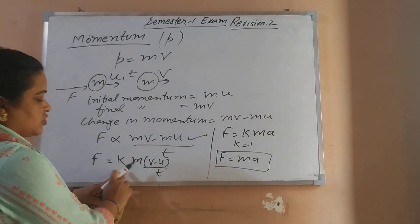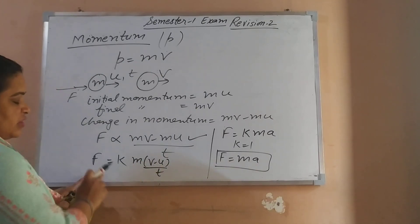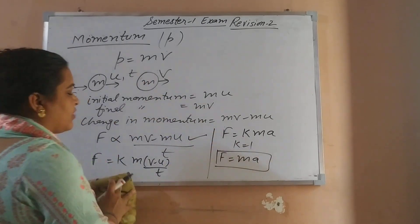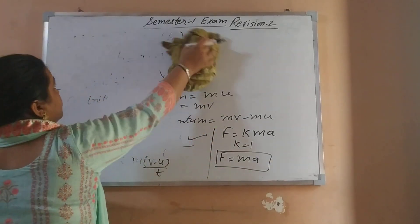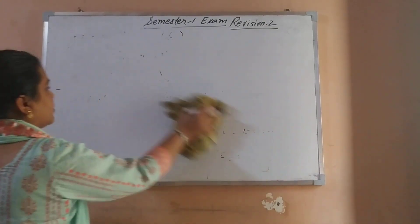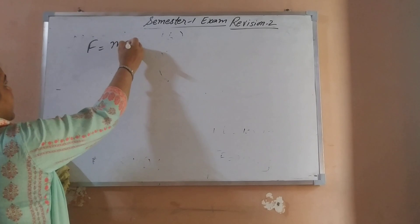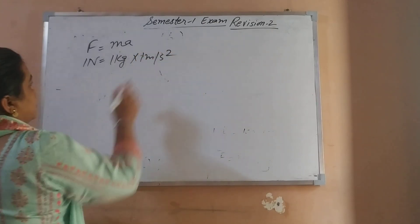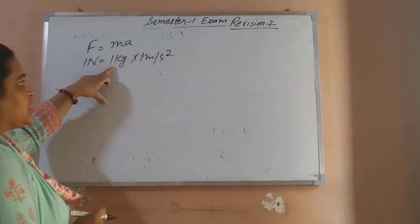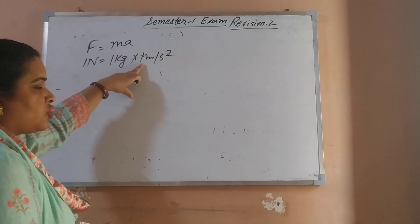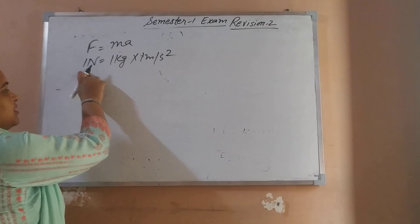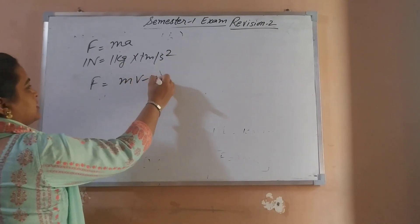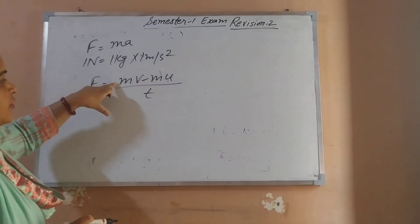From F = MA we can define 1 Newton: 1 Newton is the force applied on a body of mass 1 kilogram that produces an acceleration of 1 meter per second squared. We can also write F = (MV − MU) / T, which means rate of change of momentum, and this has many daily life applications.